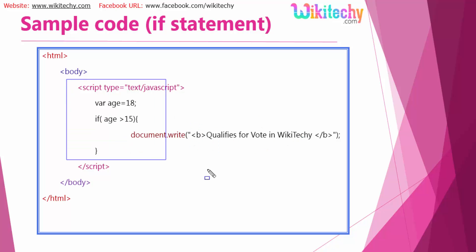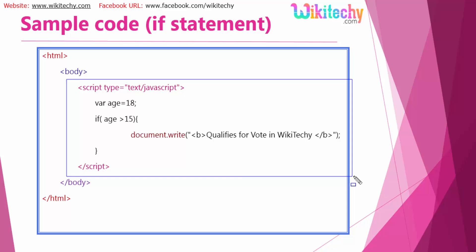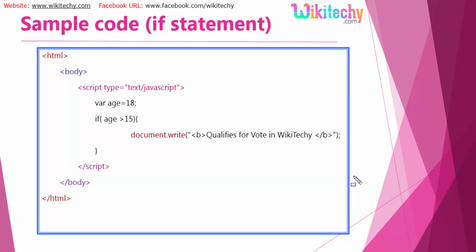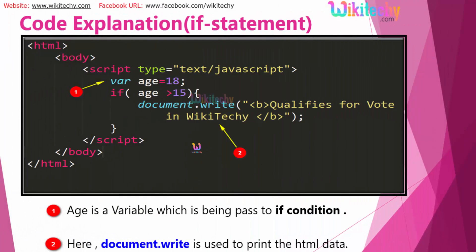Here is the overall script output. This is a colorful presentation of the code. The variable age is 18, and since age is greater than 15, this code will execute. The condition is satisfied, so this code will be executed.